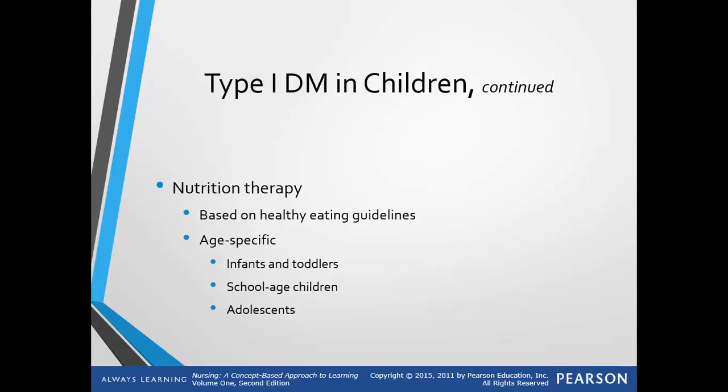They do a lot of carb counting with kids, so they basically know how much insulin to give themselves according to how many carbs they eat as well as based on their blood sugar levels. Nutrition therapy is based on healthy eating guidelines. They are age-specific because infants and toddlers, preschool-aged children, and adolescents differ based on the insulin, the type of food they eat, and their weight. There is a table on page 771 in your book, Table 12-8, that goes into more detail on those nutrition guidelines.